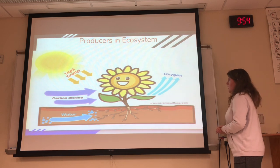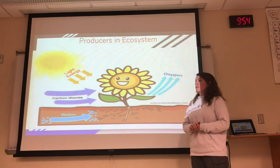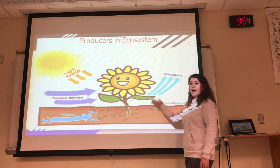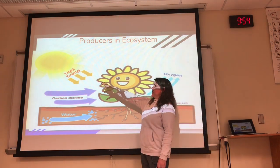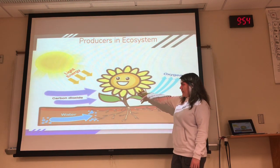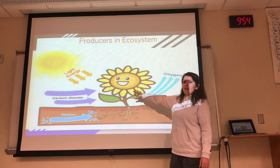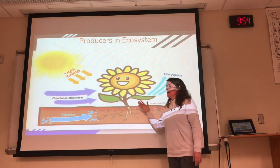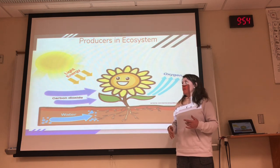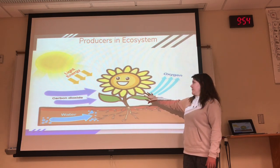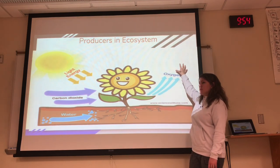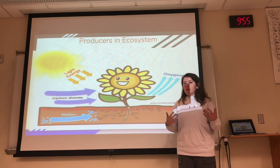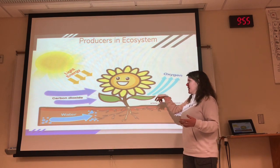Next we're talking about producers in ecosystems. For example, a flower receives light energy from the sun, absorbs it, and photosynthesis takes place — which is when plants make their own food. The flower then releases oxygen into the air, which is the air that humans breathe, creating a cycle.